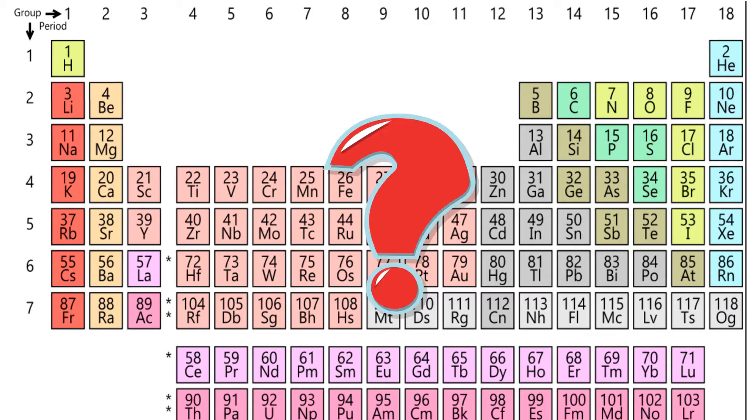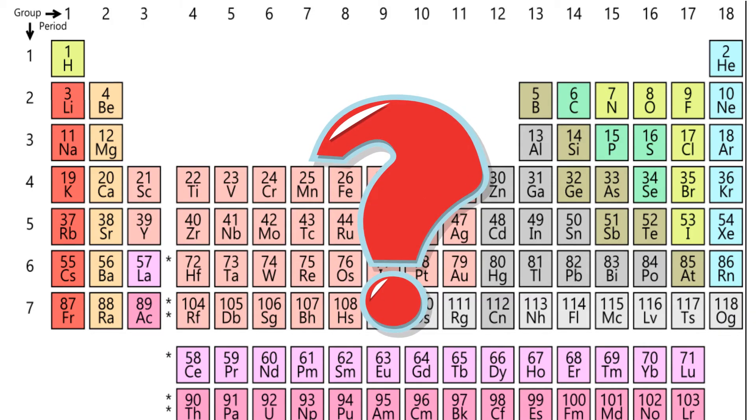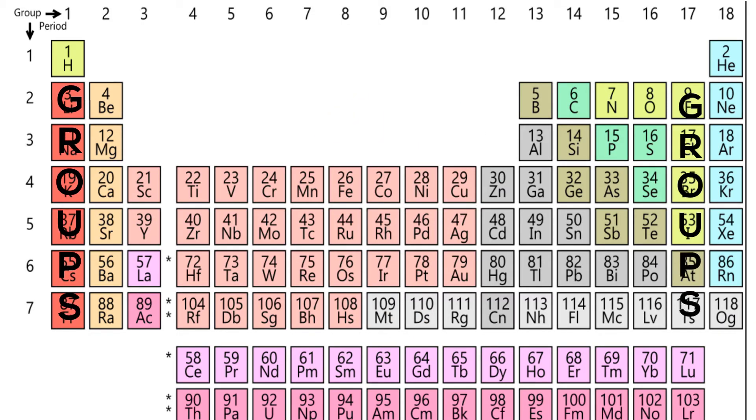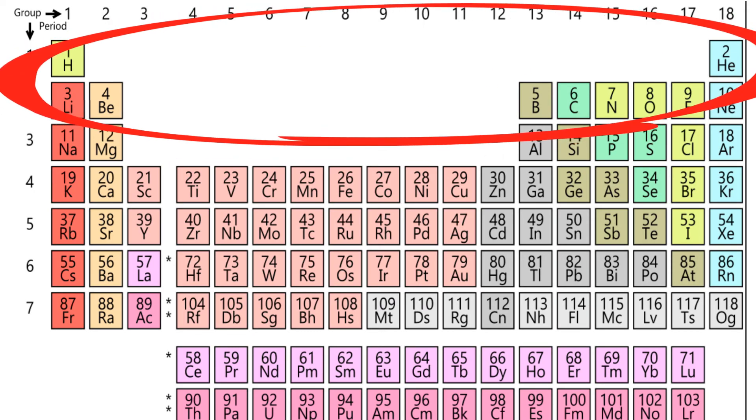What do the vertical columns tell us? These columns are called groups. Elements in groups contain similar chemical properties. Elements in the first two rows of the table are called the typical elements. Seven of the groups have names and here they are.